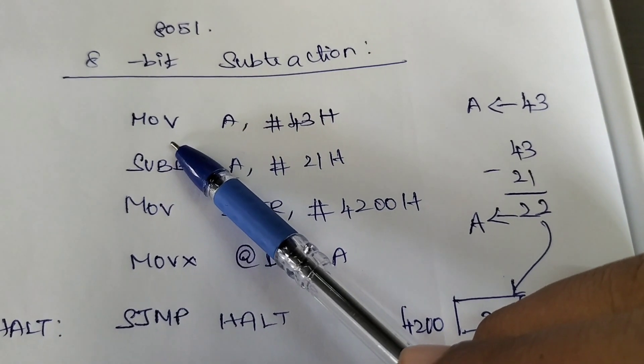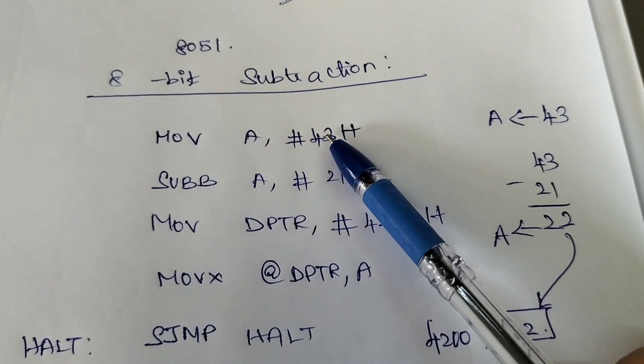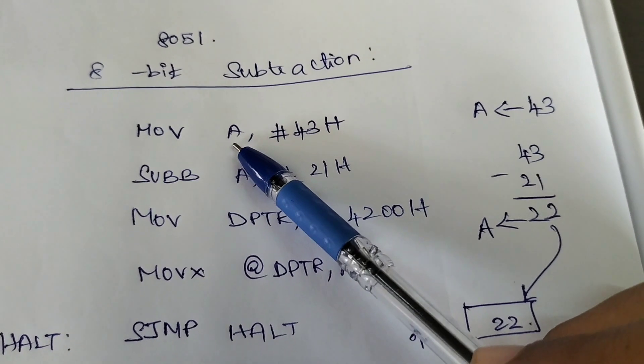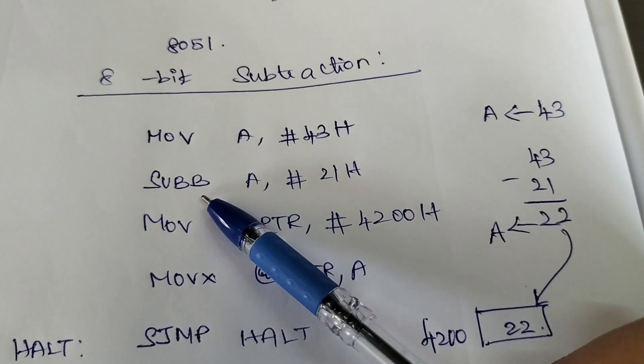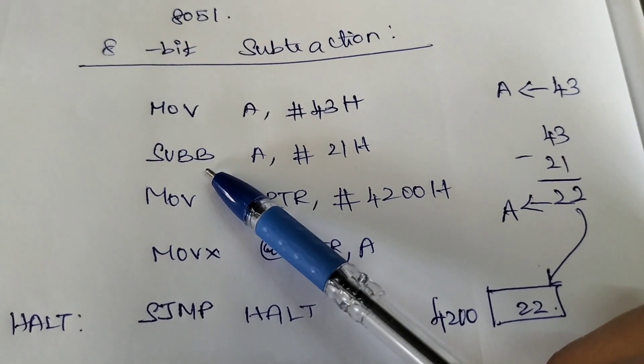For that we are using this instruction which is immediate addressing mode: MOV A, #43. Hash indicates immediate data. So 43 is moved to accumulator. In subtraction we do not have SUB, we have SUBB - subtract along with the borrow.